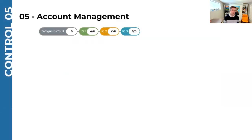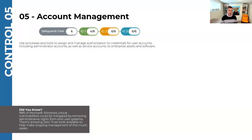Last session we went through the first four CIS controls. Today we start on number five: account management. This control has a total of six safeguards — four in implementation group one and the other two in groups two and three. It's about making sure that only the right people have access to the data, systems, software, and services encompassed by your technology.